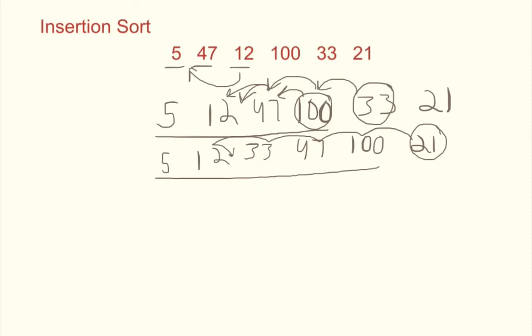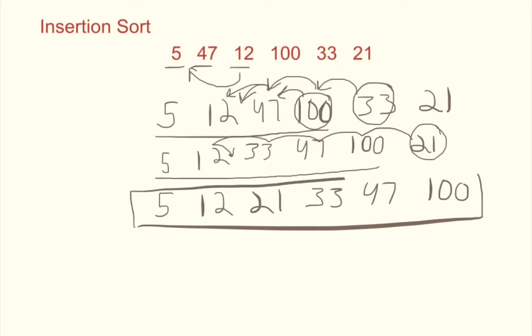And so for the last iteration, we know it's 5, 12, 21, 33, 47, and 100. And so there you go. You have a fully sorted list.